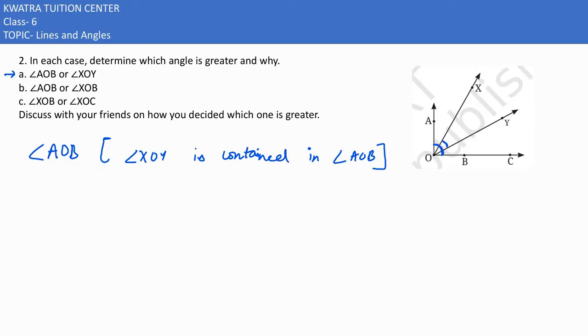In part B we have AOB and XOB. AOB is this one, XOB is this one. Again notice that our angle AOB is greater than XOB. Why? Because angle XOB is contained in angle AOB.